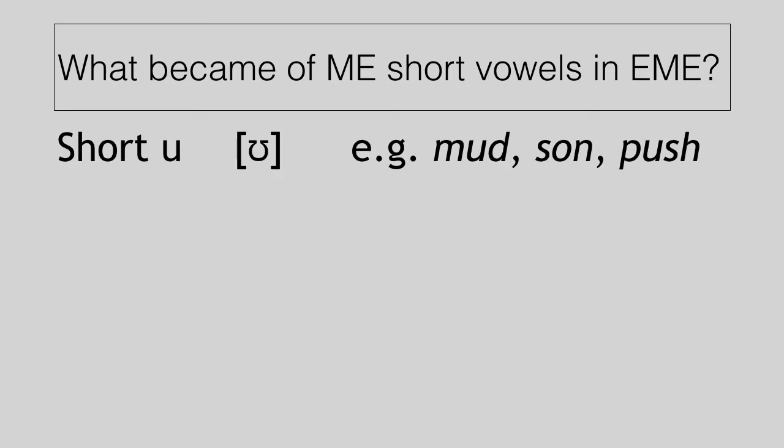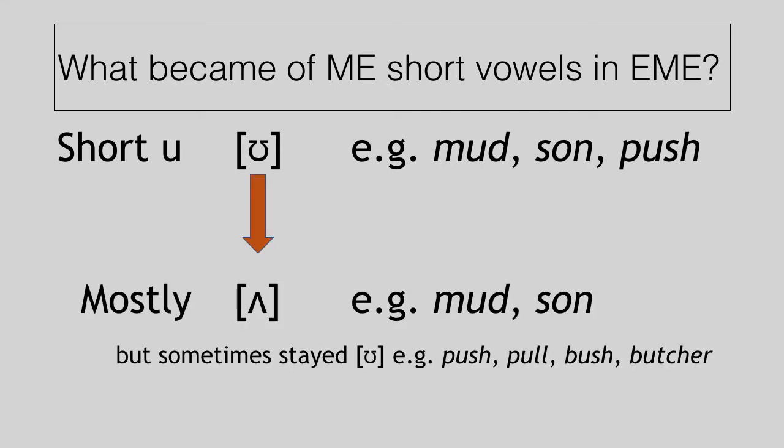Short U is a little bit more complicated. So short U was an [ʊ] in Middle English. So you'd say mud and sun and push with an [ʊ] vowel. In Middle English, most examples of words that had that U sound, the short U sound, come out as an [ʌ] sound. So we say mud and sun with a mid-central vowel. That's represented by the wedge symbol.